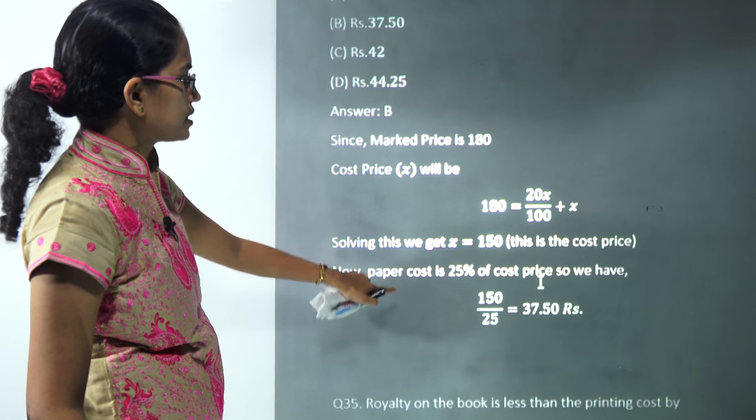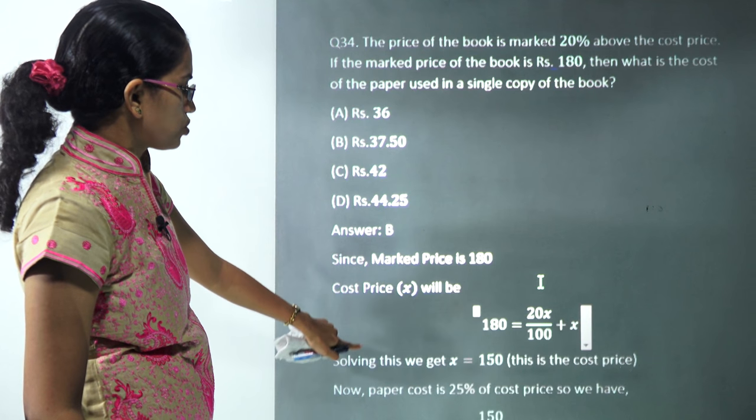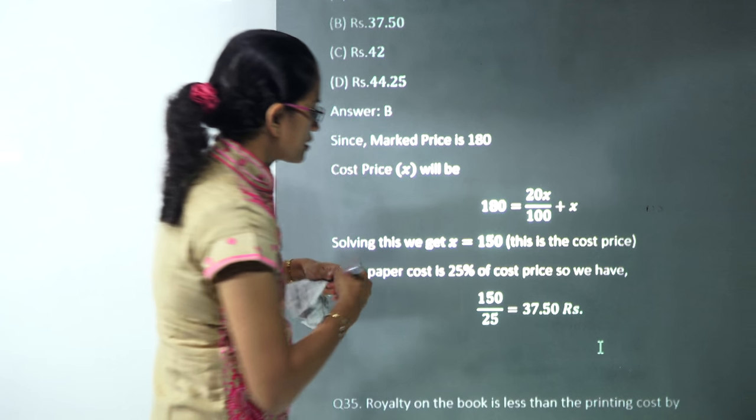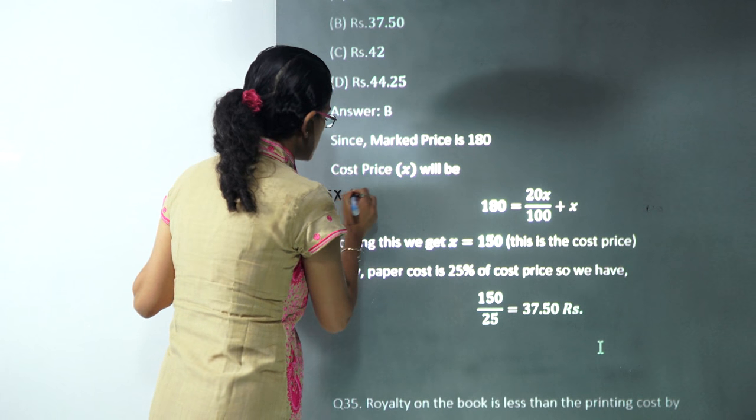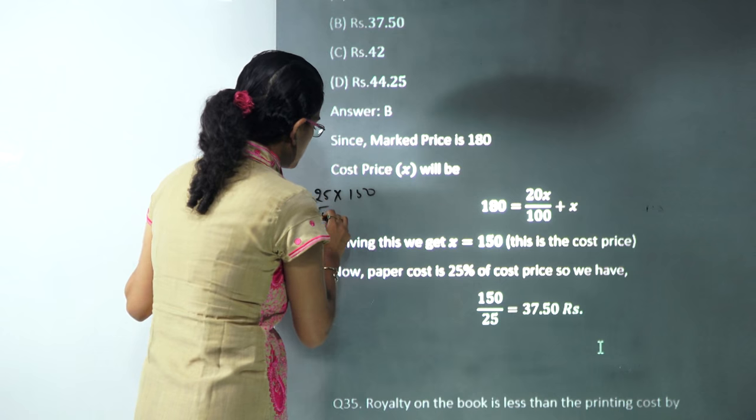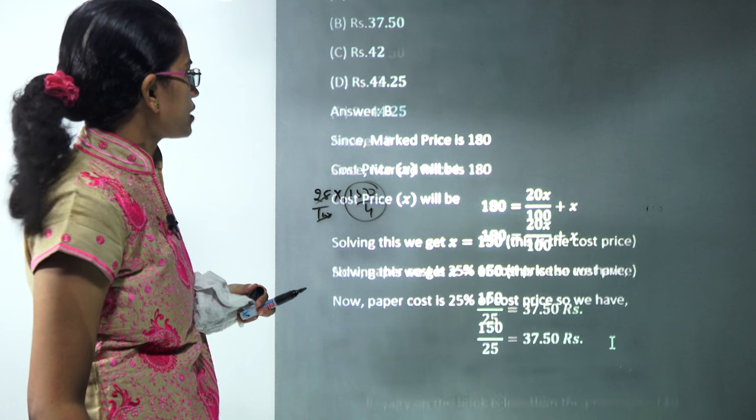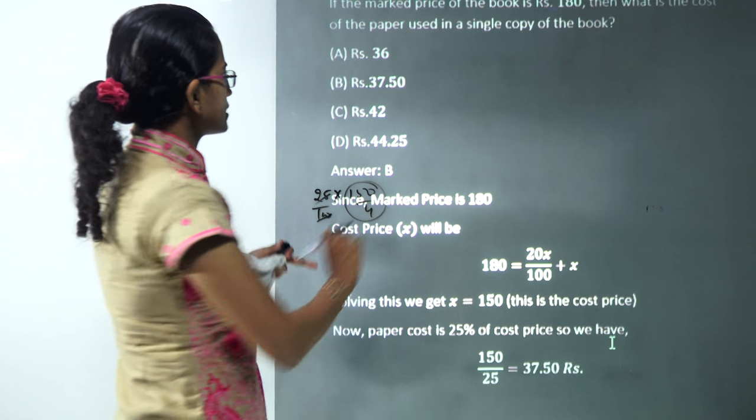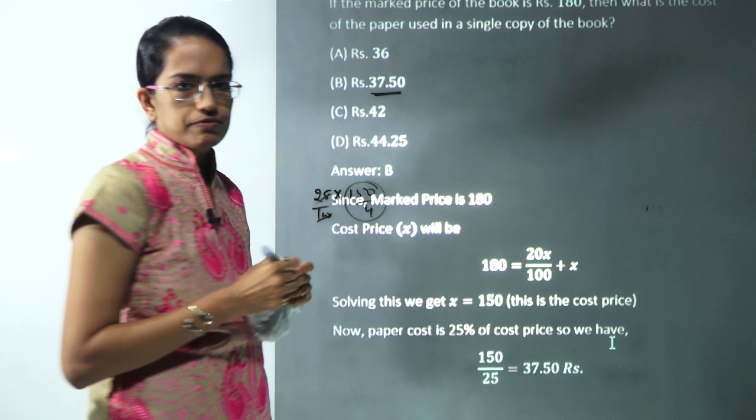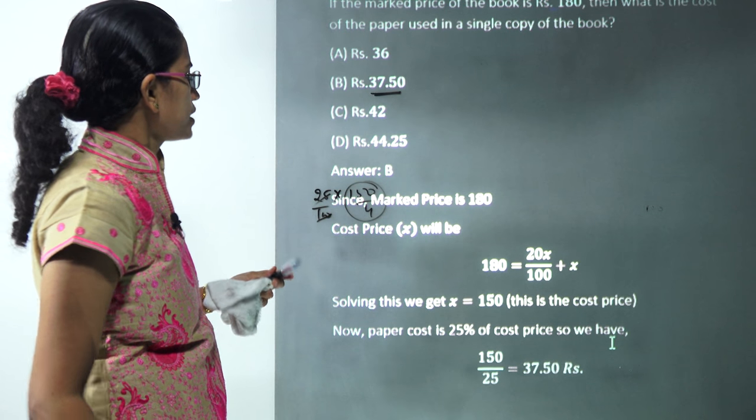That's incorrect. You would be doing 25% of 150, so that's one fourth of 150. So 75 and half of 75, that's 37.25. That would be the correct answer here, so 150 by 4 would be the right option.